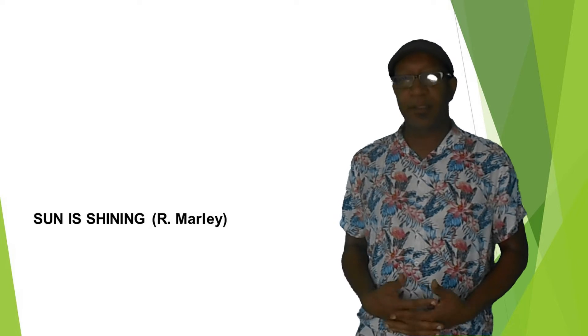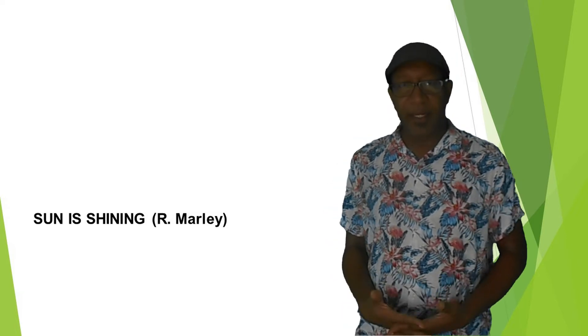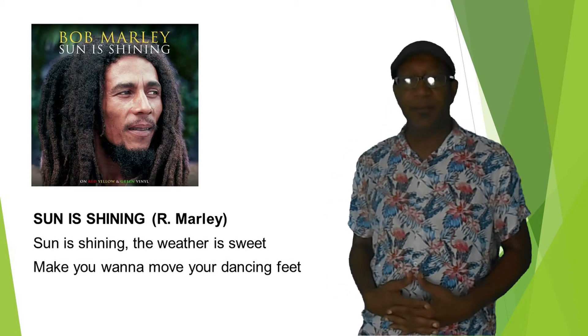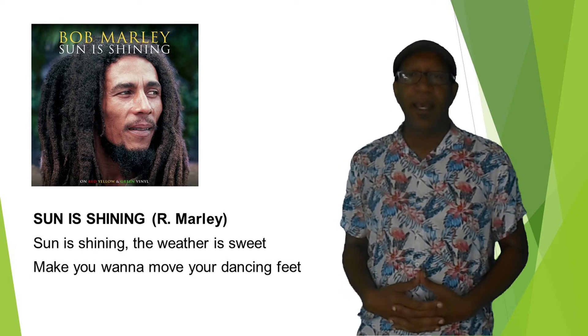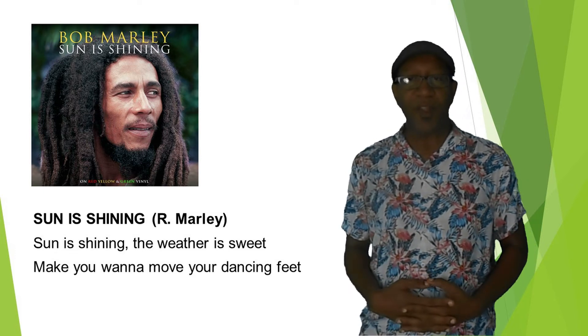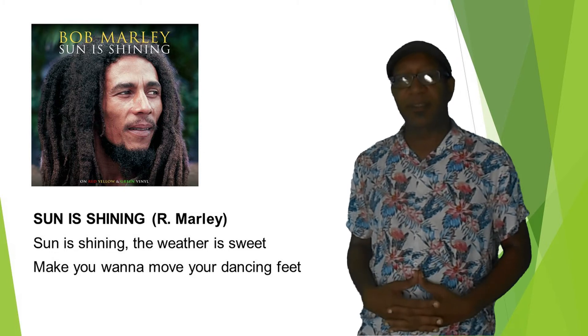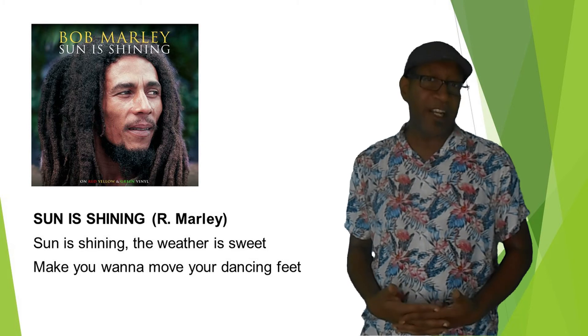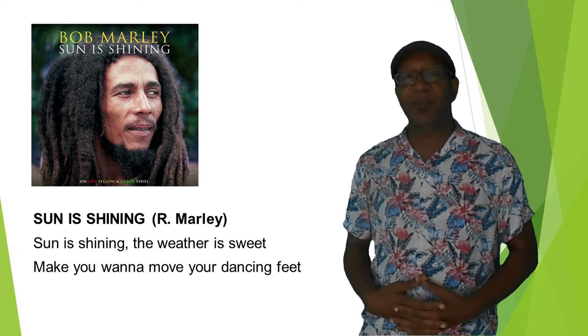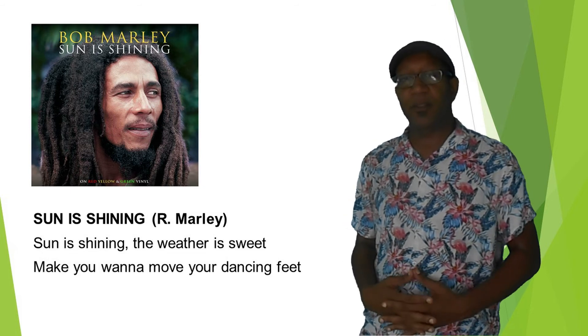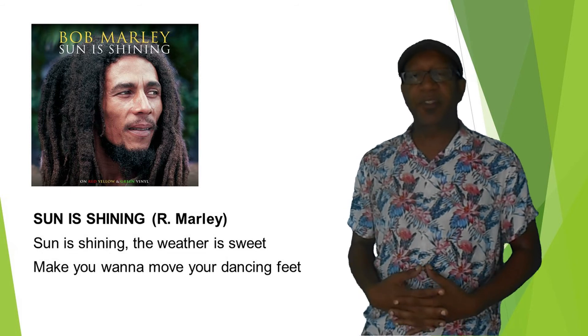Here we have the lyrics for the song 'Sun is Shining,' from the singer and guitarist Robert Nesta Marley, mostly known as Bob Marley. In the lyrics, he said: 'Sun is shining, the weather is sweet, make you want to move your dancing feet.' And we can see the picture of Bob Marley for the single 'Sun is Shining.' My question to you is: what is the season Bob Marley is praising in the lyrics of 'Sun is Shining'?